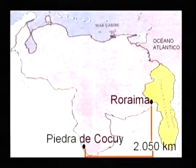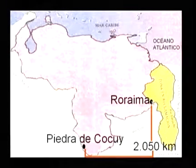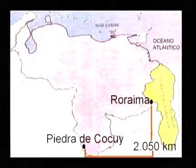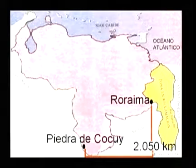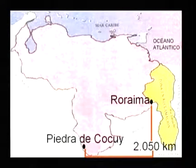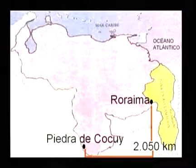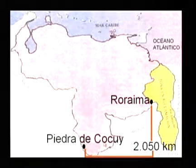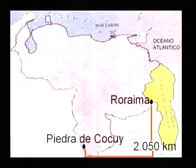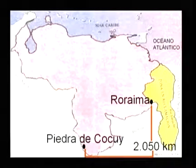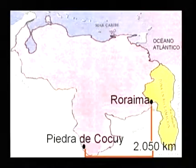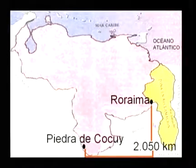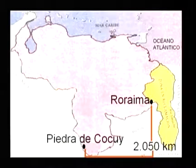Hacia el sur limitamos con la República de Brasil. Nuestro límite comienza en el Cerro Roraima y termina en Piedra del Cocuy. Allí vamos a tener una longitud de 2.050 kilómetros. Toma las anotaciones correspondientes; te damos un minuto para que lo hagas.